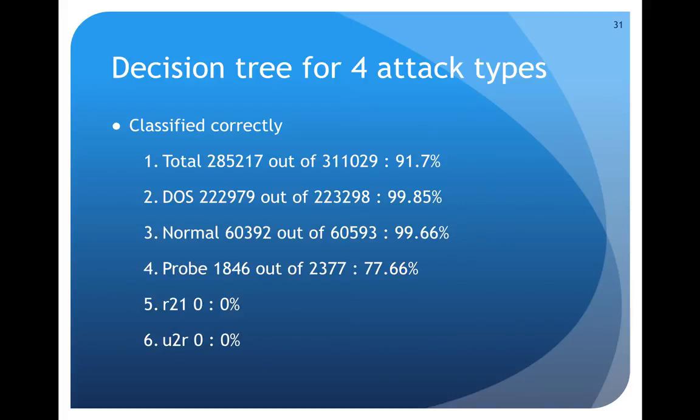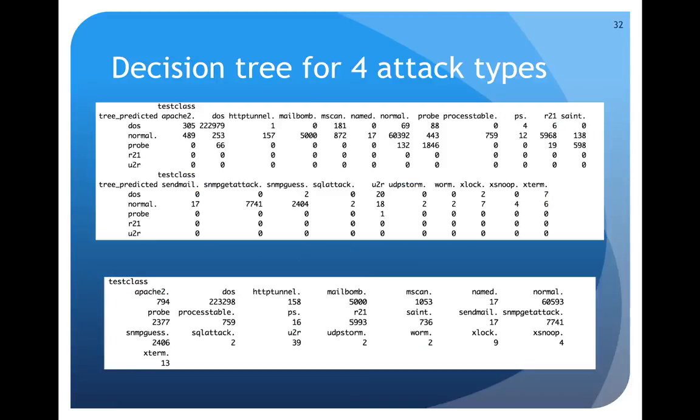On overall dataset I got 91.7 percent accuracy. DOS I got 99.85 percent accuracy. I could classify normal records with 99.66 percent accuracy and probe with 77.66. It couldn't identify any of the R2L or U2R records correctly. These are the confusion matrices.